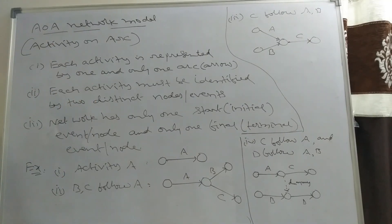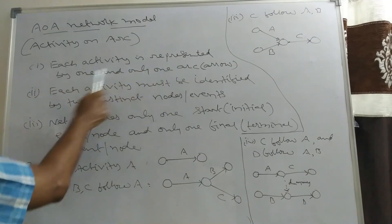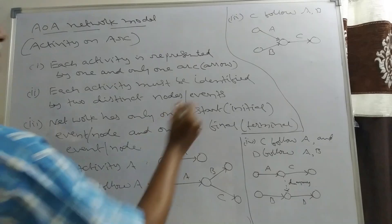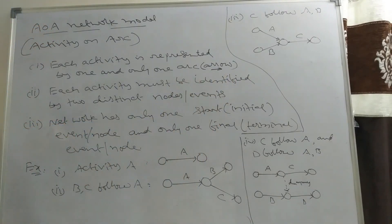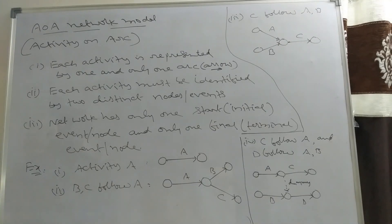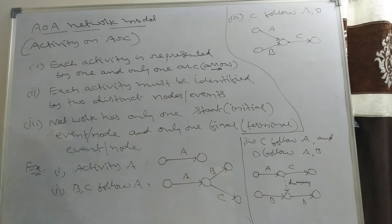These are the rules to follow in constructing an AOA network. Rule 1: Each activity is represented by one and only one arc or arrow. Rule 2: Each activity must be identified by two distinct nodes or events. Rule 3: The network has only one start event (initial node) and only one final event (terminal node).